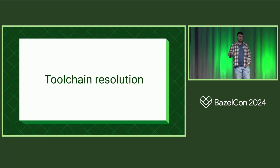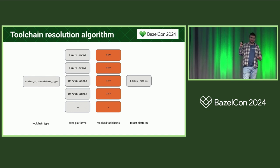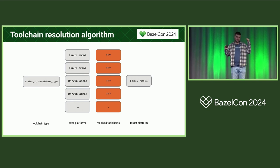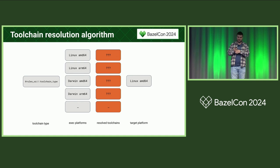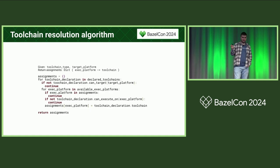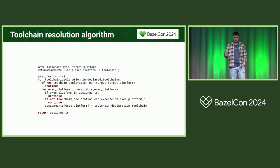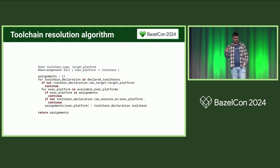Those constraints define where the toolchain can run and what it can target — and these are very relevant for toolchain resolution. There are two phases of toolchain resolution. In the first phase, you put in a single toolchain type, all of the registered execution platforms, and a single target platform, and you want to know: for each execution platform, which toolchain will Bazel use? The pseudocode iterates over every declared toolchain in the order they were declared — so order matters. You first check if the toolchain can target the target platform; if not, it cannot be used. Then you check each execution platform.